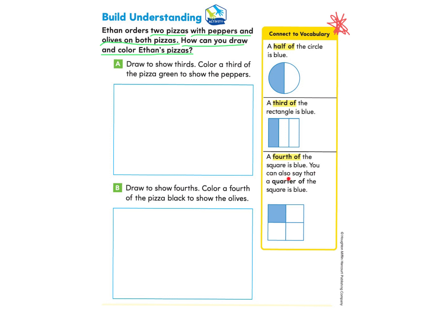We have four equal shares and only one of them is colored in blue. A fourth of the square is blue. You can also say that a quarter of the square is blue. This information may help us as we go back to our problem, which asks us to draw to show thirds and then color just a third of the pizza green to show the peppers.